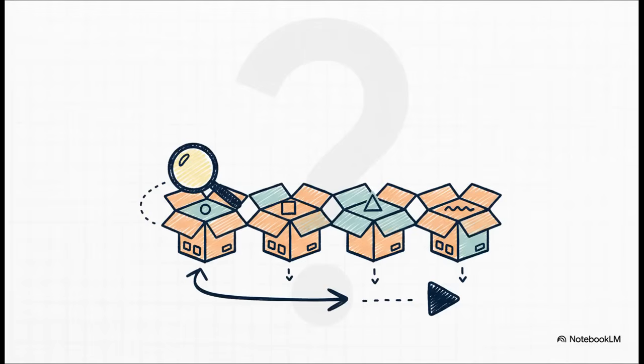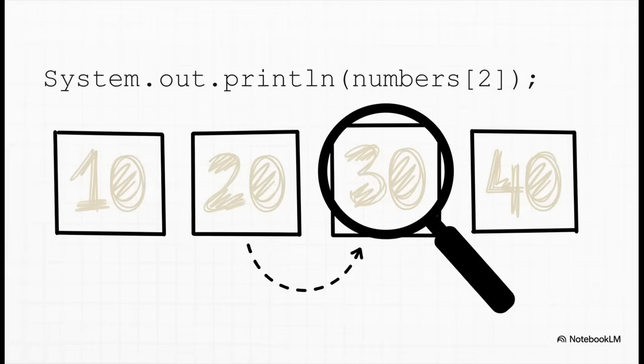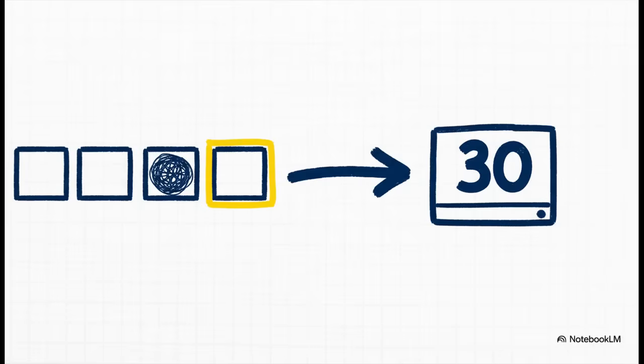So we've got our stuff in the boxes. But how do we get it out again? How do we actually peek inside a specific box to see what's there? It's super easy. You just call the array by its name — in this case, 'numbers' — and then in square brackets, you put the number of the box you want to look in. So numbers[2] is literally telling the computer: go to that numbers array and tell me what's in box number two. And there it is: 30.